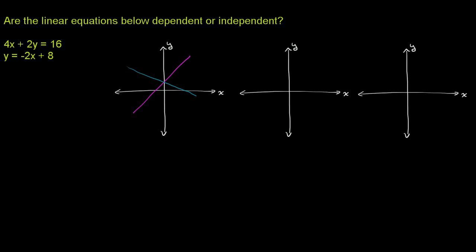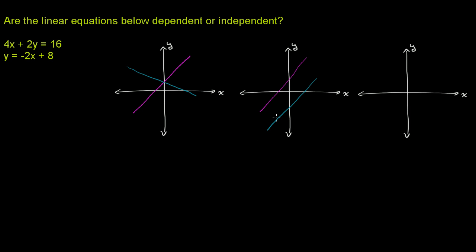You could have two lines that are not the same line but they don't intersect — they have the same slope but different y-intercepts, so they are parallel to each other. These are parallel lines.